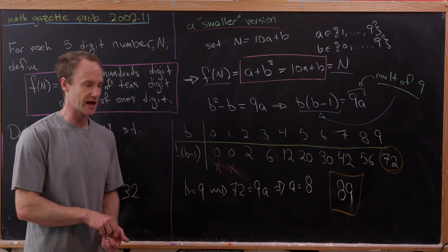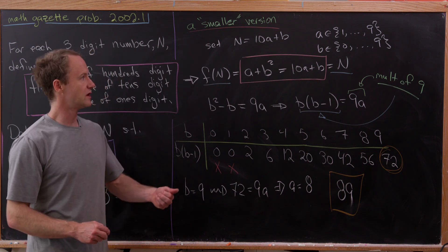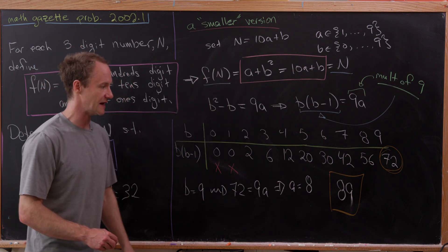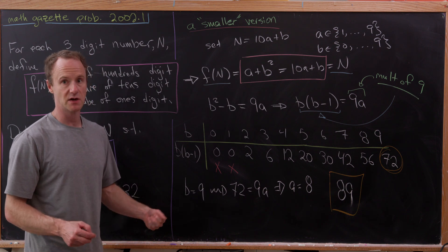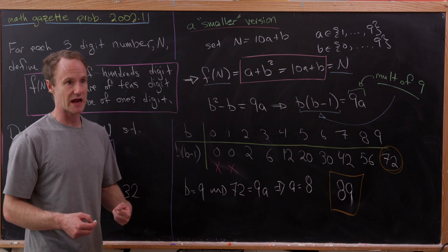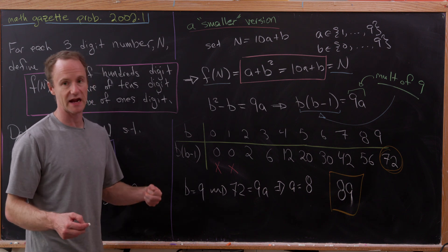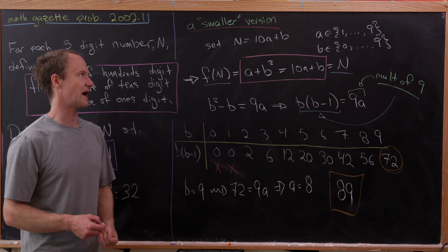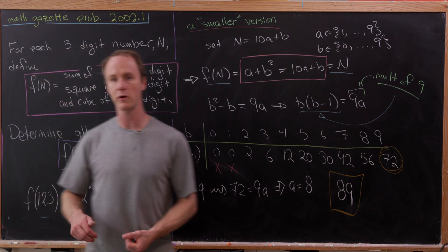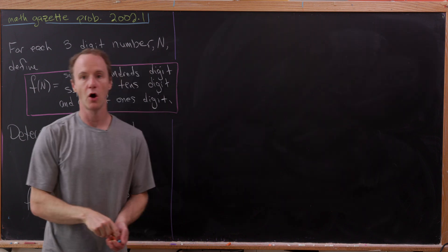What you can check is if you do this process on 89, you'll have 8 plus 9 squared, 8 plus 81, which is 89. So it does satisfy our simpler rule here. Okay, so now let's maybe jump into the main problem.